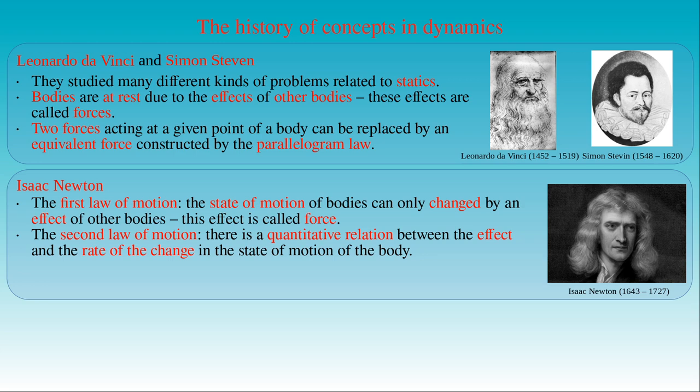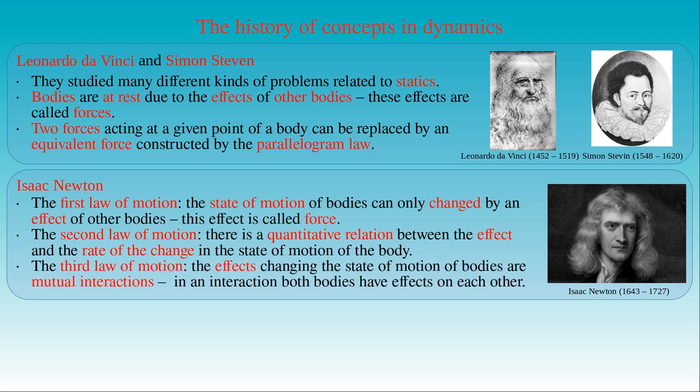In the third law of motion, Newton assumed that the effects changing the state of motion of bodies are mutual interactions — that is, both bodies have opposite effects on each other in their interaction. As a consequence of the laws of motion, two fundamental properties of bodies were introduced. In the case of bodies at rest we can talk about the gravitational mass, associated with the heaviness of bodies determined in static measurements. Bodies also have inertial mass, which can be interpreted as their resistance to effects changing their state of motion, determined in dynamic measurements.